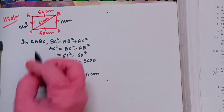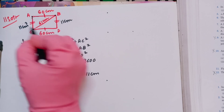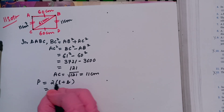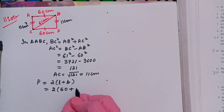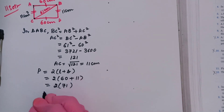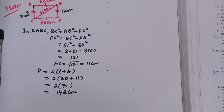Now all sides of the rectangle are known: 60, 11, 60, 11. Perimeter = 2 × (l + b) = 2 × (60 + 11) = 2 × 71 = 142 centimeters. Therefore, the perimeter of the rectangle is 142 centimeters. The fifth problem is similar to the fourth one — have a look at it on your own. That's it for today.